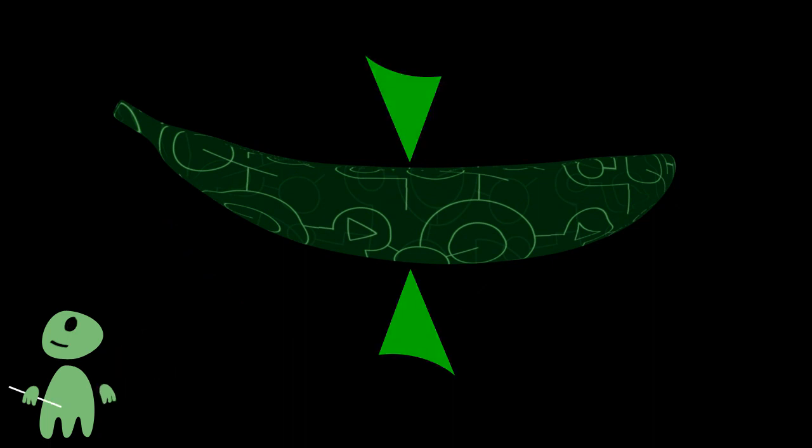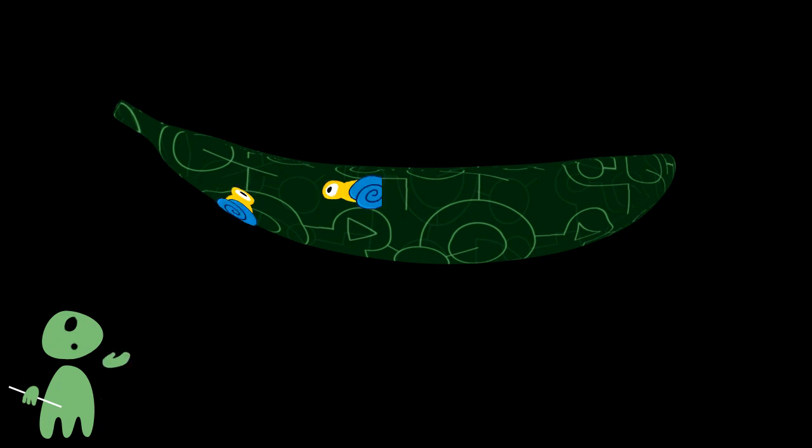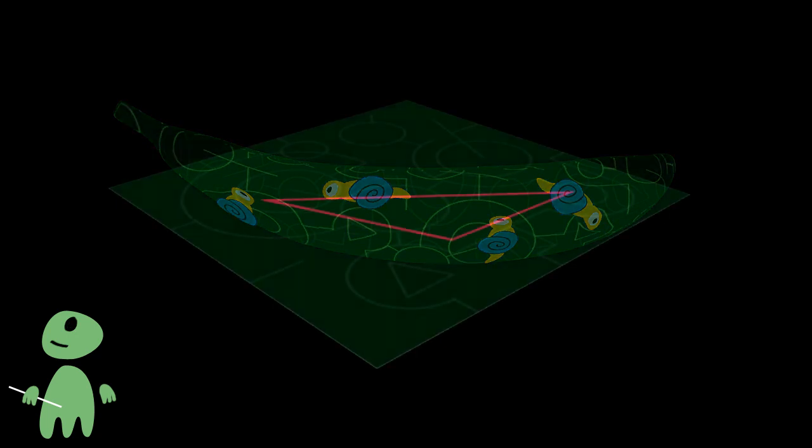Now, the difference is easily visible from the outside, but how to explain it to flat snails inside the surface? Well, you could try to explain it with triangles.